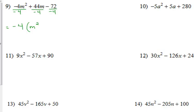Yep. I know 4 and 44 are. 72 is as well. So we're going to take out a negative 4. When we take out a negative 4, we're left with m squared minus 11m plus 18.